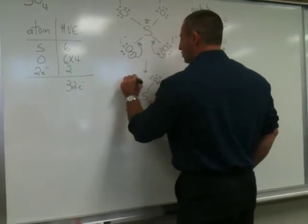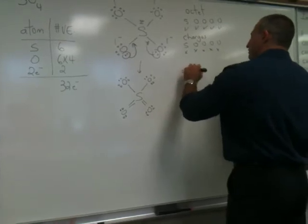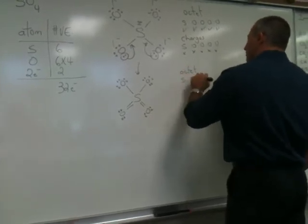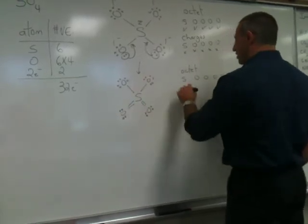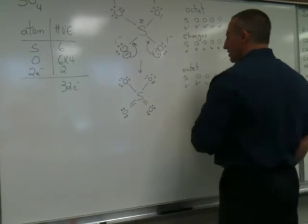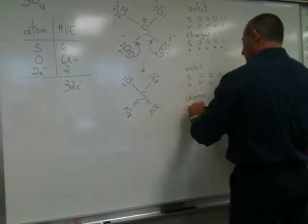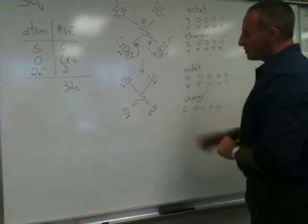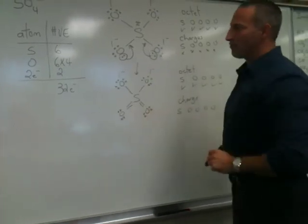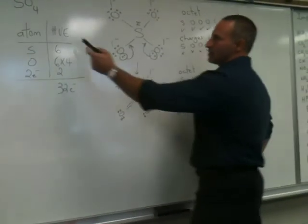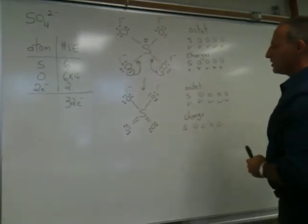Now if we analyze this structure, we'll see that the octet requirements are met for every one of the atoms involved. Sulfur has an expanded octet. All the oxygen atoms still have their octets. So that consideration is met. For charge, we see that these oxygen atoms no longer have formal charge. Only these two oxygen atoms have a formal charge. But that's okay because it's the sulfate anion. It's supposed to have a formal charge of negative 2.